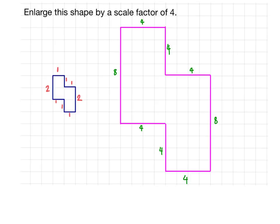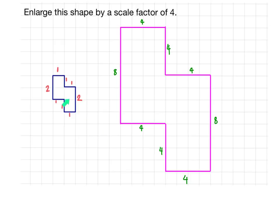So here we have our enlarged shape. Looking at the original shape, the side was 2 boxes up — 2 times the scale factor of 4 is 8 — so the new shape has a dimension of 8 there. And 1 across this way: 1 times 4 is 4, so 4 across this way. You can see the same thing for all the other dimensions. I have just multiplied the dimensions of the original shape by the scale factor of 4 and drawn the enlargement.